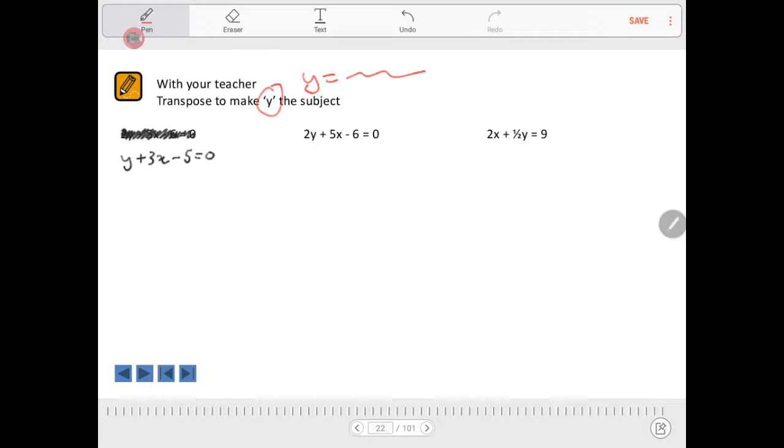But this 3x and this negative 5 need to go over the other side of the equal sign. And they will perform the opposite operation to what they're doing on this side.